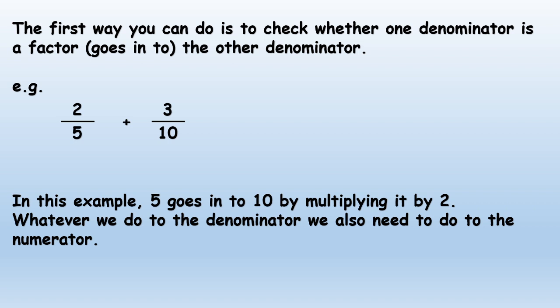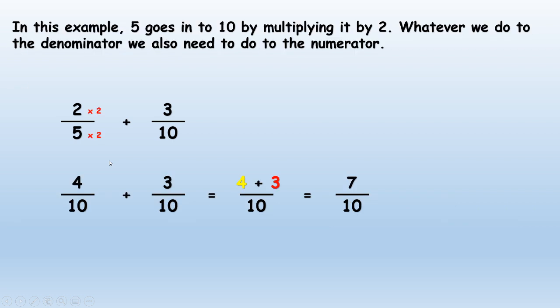Example, two fifths plus three tenths. In this example, five goes into ten by multiplying it by two. But we're not just going to multiply our denominator by two to get the same denominator. We're also going to multiply our numerator by that multiple as well. So two times two will give us four and five times two will give us ten. Now our denominators are the same. So we copy our denominator, we add our numerators, and we get our new fraction, which is seven over ten.